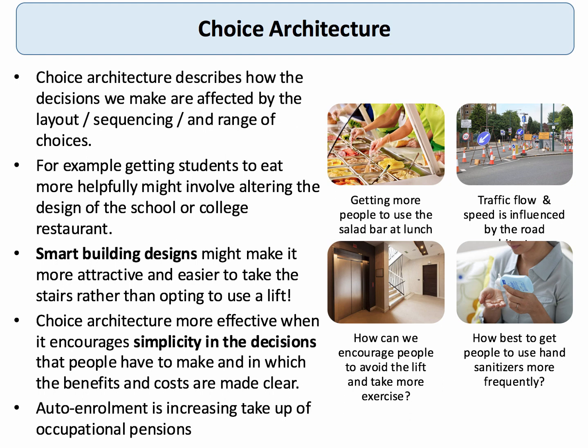Crucially, choice architecture tends to be more effective when we can make it a simplicity of decision — where people don't have to weigh up all the benefits and costs of a choice and can make a change fairly easily. That could be, for example, altering the default option, since most people tend to stick with the default choice. Or maybe changing the number of options available — in terms of food choices in a restaurant — or simply changing the wording in order to manipulate our decisions.